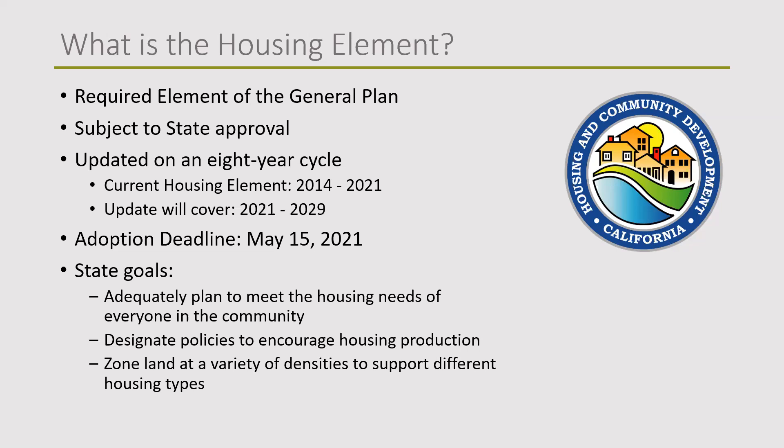This year we begin the new housing element cycle for 2021 that will extend through 2029. By statute we are required to have the element adopted by May 15th of this year — that deadline is set in state law and cannot be changed. The state's goals include adequately planning to meet housing needs of everyone in a community, designating policies to encourage housing production, and ensuring cities and counties have adequately zoned land at a variety of densities to support different housing types.